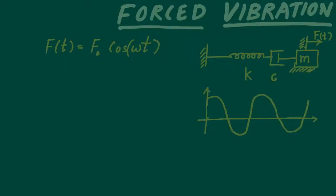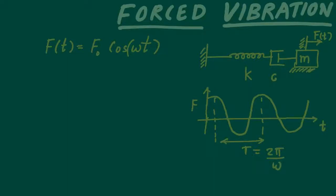Here ω is the frequency of the excitation. If we consider the time period T of this function, plotting F versus time, the time period is T = 2π/ω.